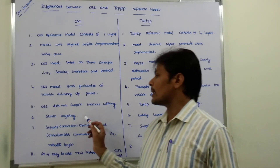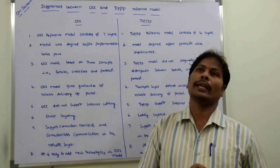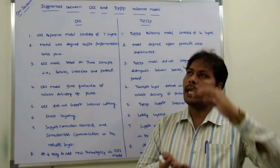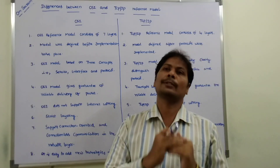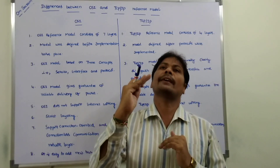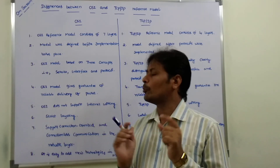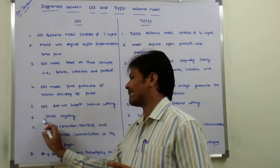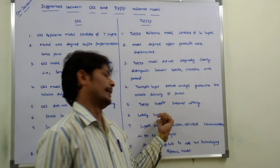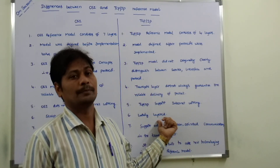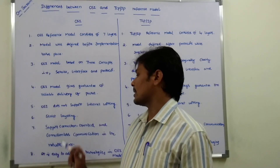The sixth difference: the OSI reference model is strictly layered — the layers are compulsorily defined from the first layer to the seventh layer in their corresponding positions. We can say it is strict layering, whereas the TCP/IP reference model is loosely layered.